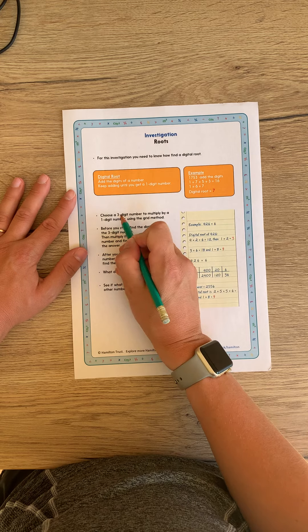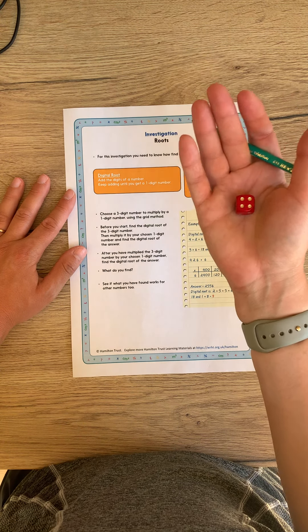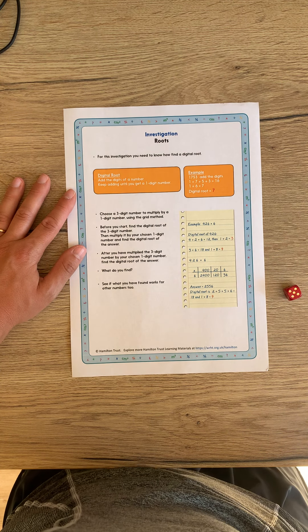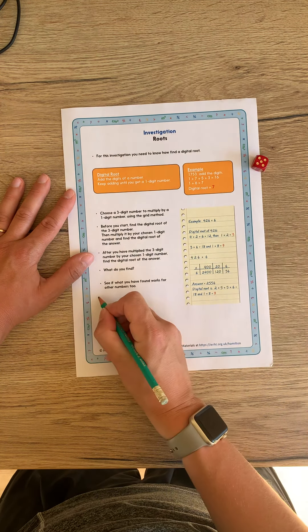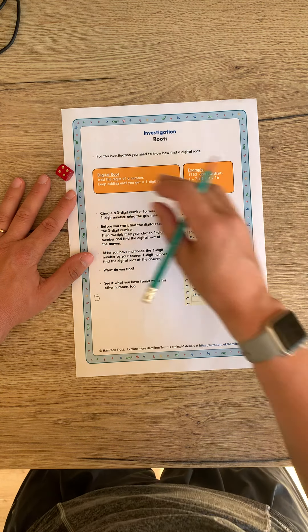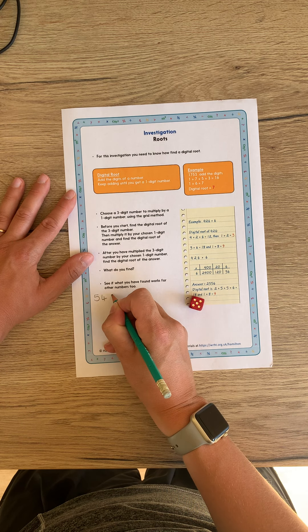So you will need to generate a three-digit number. So you could choose your own three-digit number. I haven't got my nine-sided dice. I've just got a six-sided one. So I'm just going to roll that three times. Five. Let's make a note of that. Five. Four and five. Five, four, five.